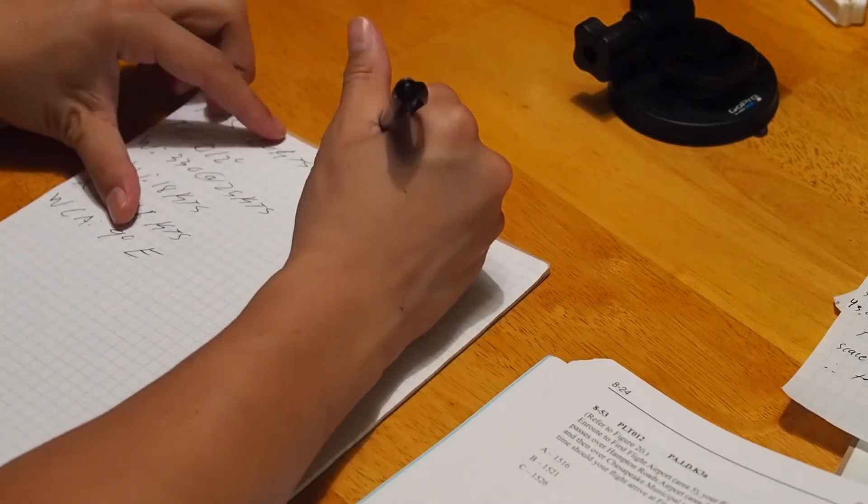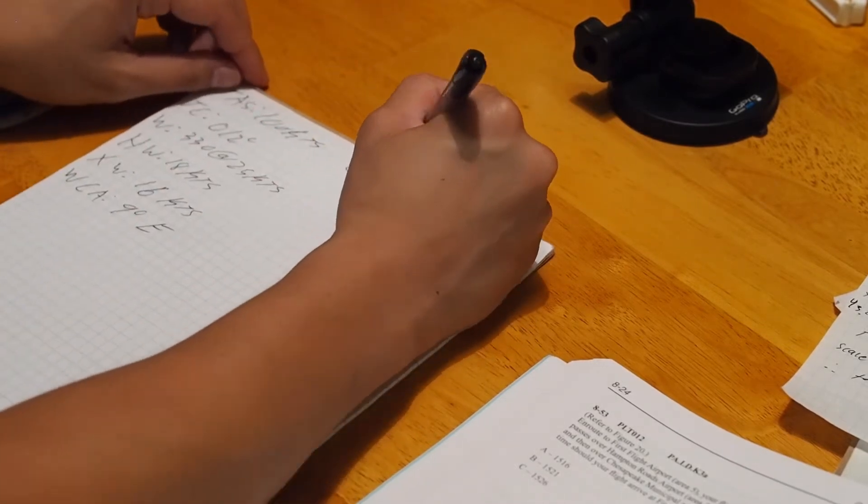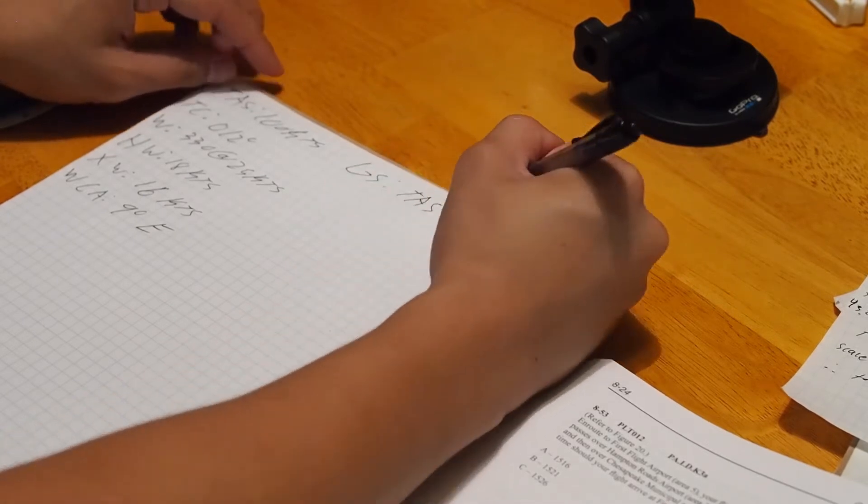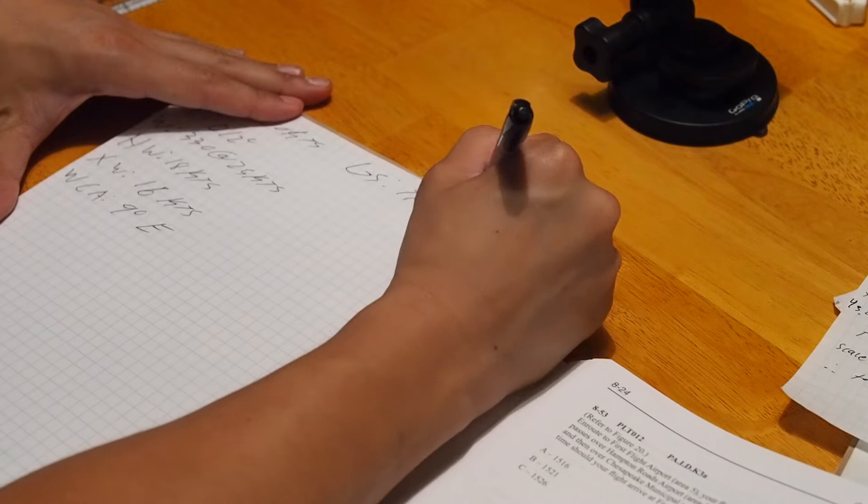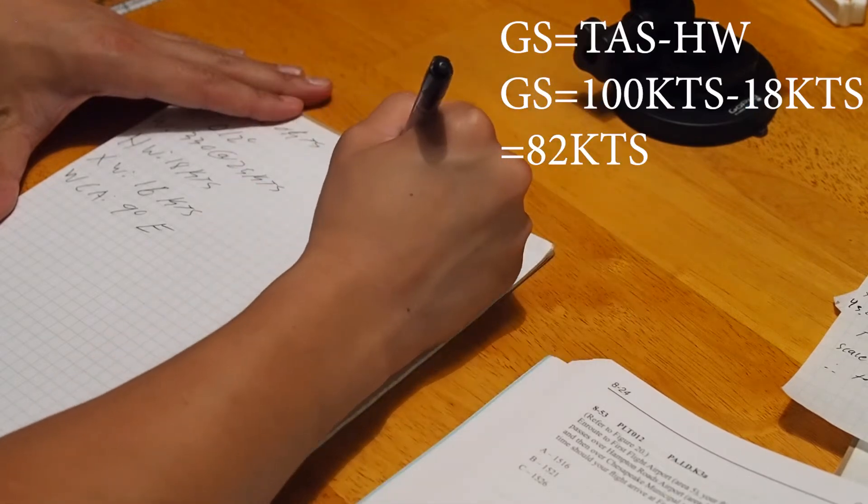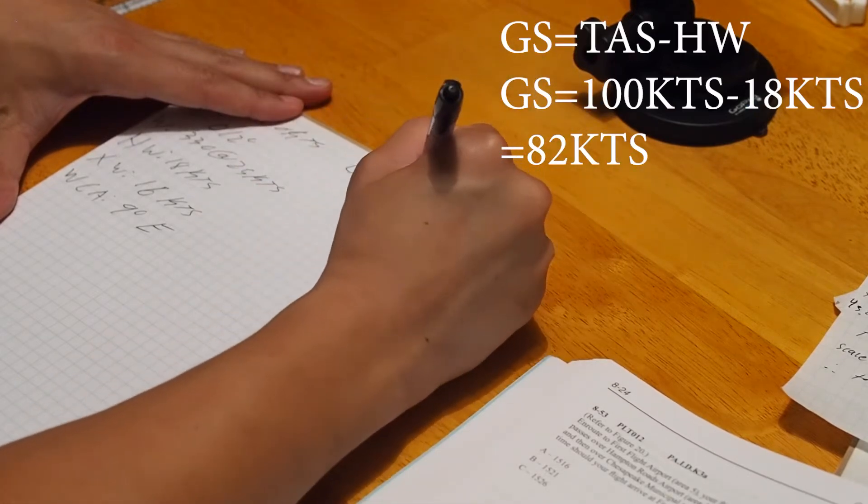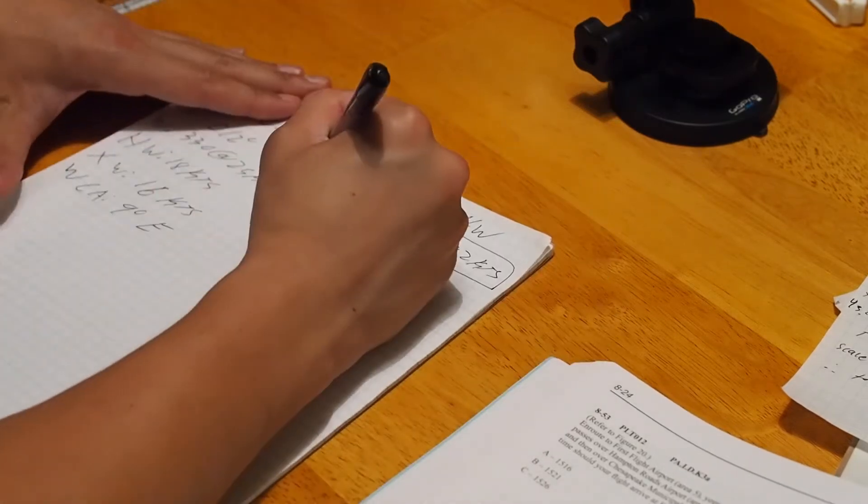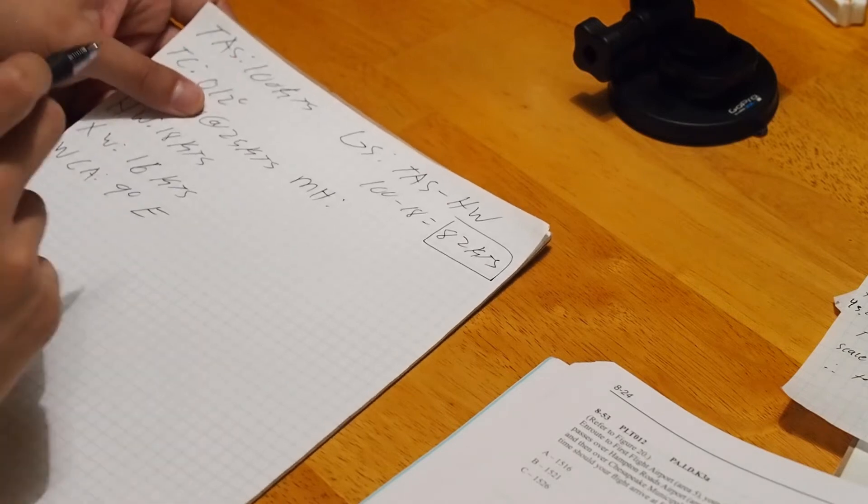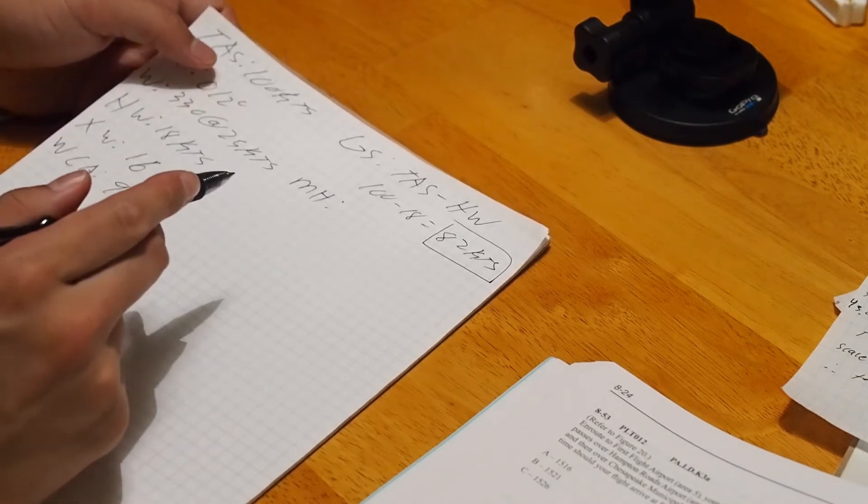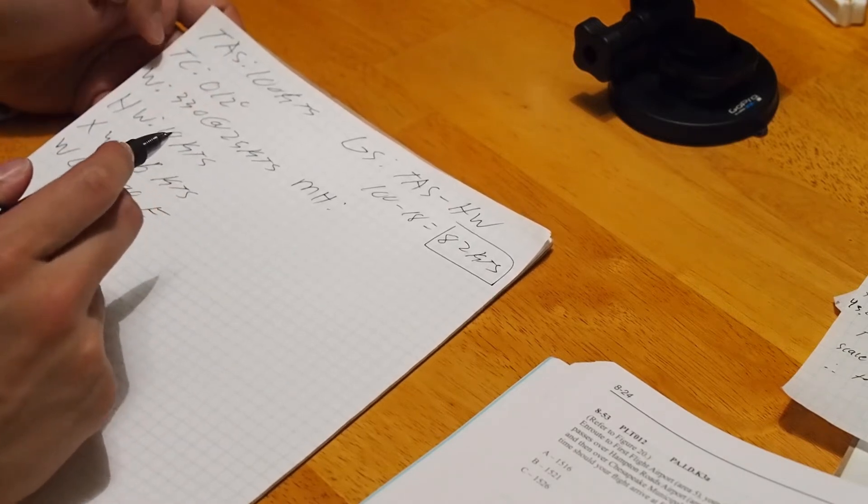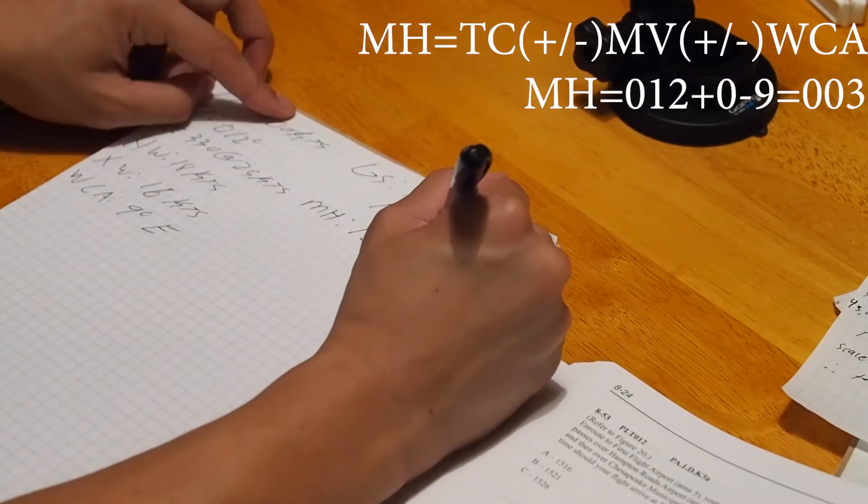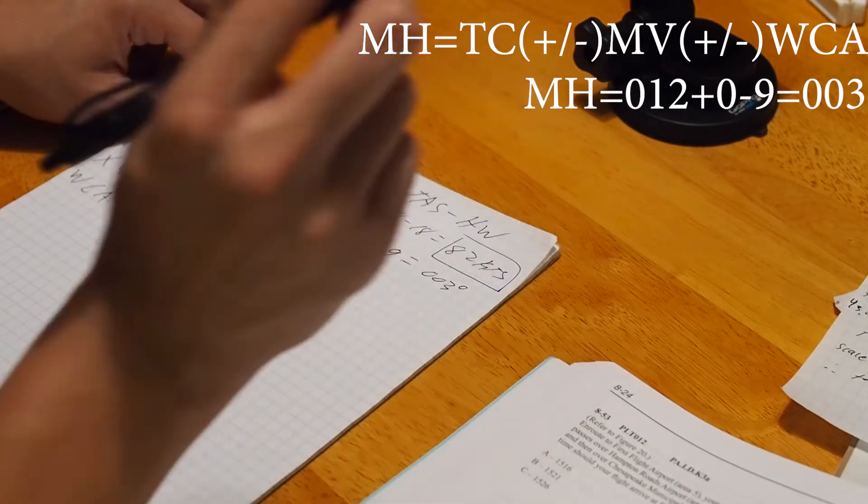So for our ground speed, ground speed is simply true airspeed minus headwind. So in this case, 100 minus 18, that equals 82 knots. And now, for our magnetic heading, what you do is you take your wind correction angle, and in this case, you subtract it from your true course. So 12 minus 9 equals 003 as our magnetic heading.